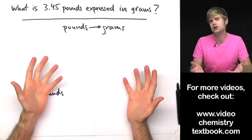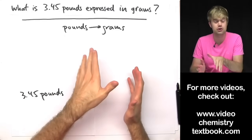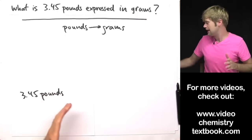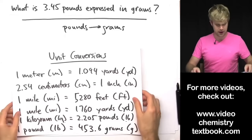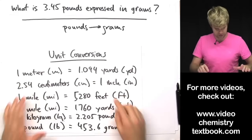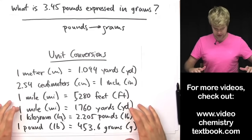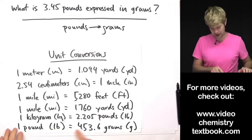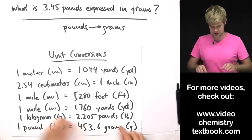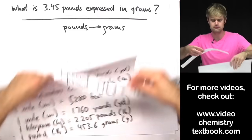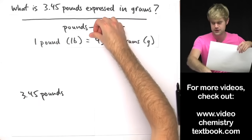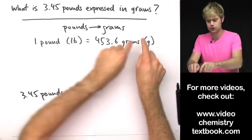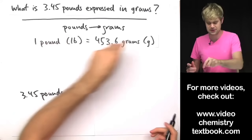You can find this information on the internet, in a textbook, or in the back of a notebook where they'll have a conversion table for the units. It's going to look something like this — you've got a bunch of relationships between different units and you want to find the equation that talks about pounds and grams. It's going to be this one: one pound equals 453.6 grams. It doesn't matter whether pounds or grams is first — it can be flipped, just as long as it has both pounds and grams in it.